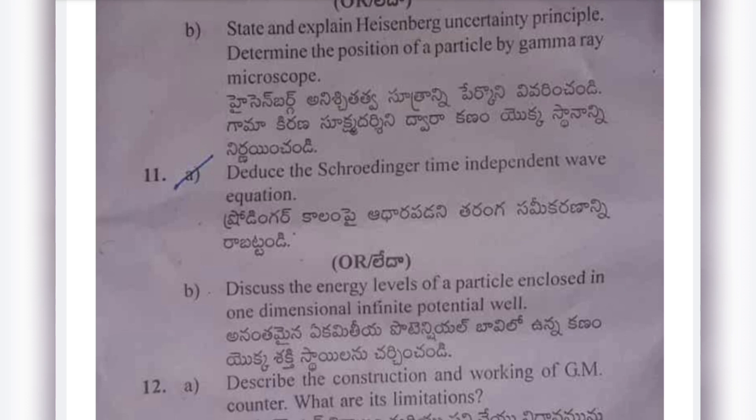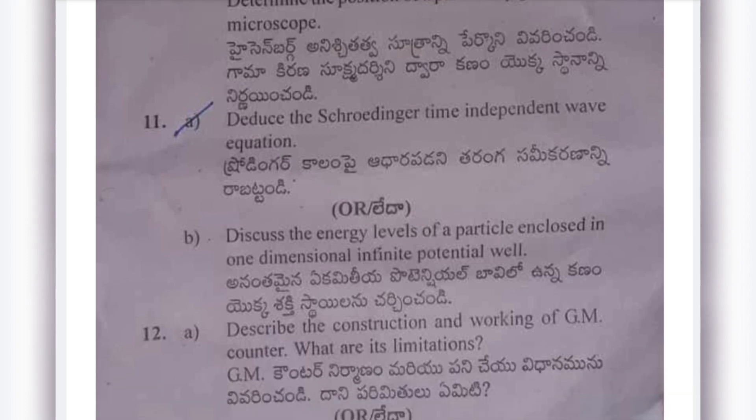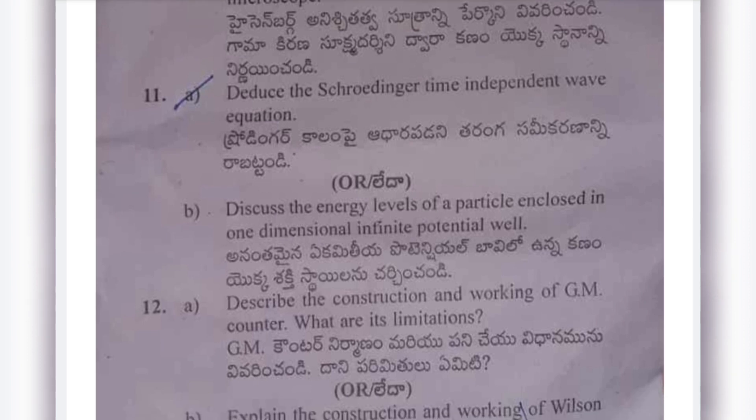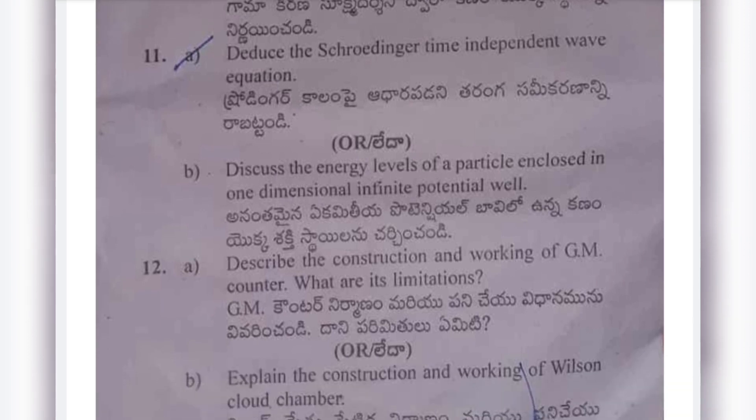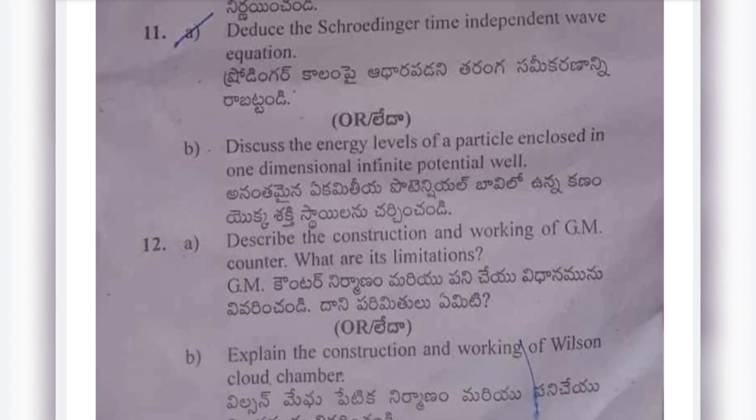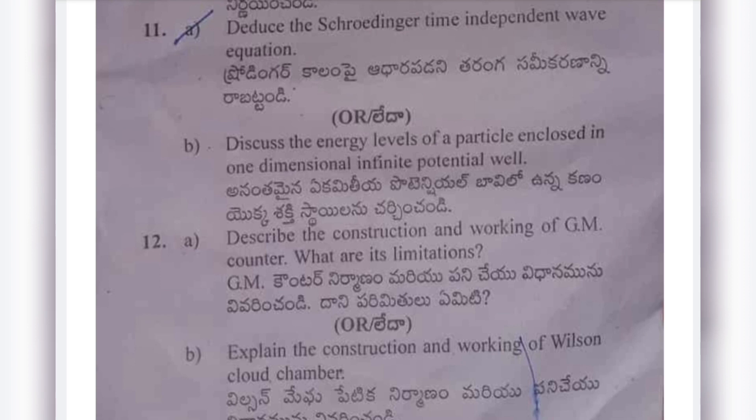Twelfth (a): Describe the construction and working of the GM counter — what are its limitations? Twelfth (b): Explain the construction and working of the Wilson cloud chamber. The university is clearly setting papers based on specific topics, so model papers may not be enough.